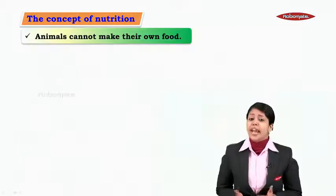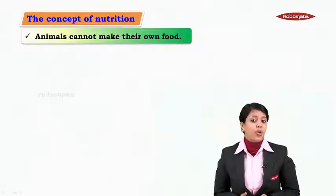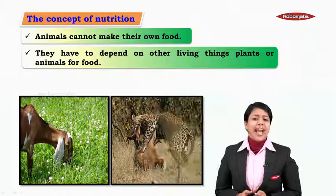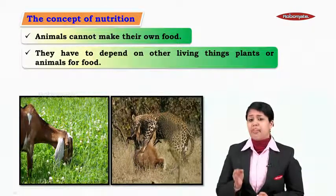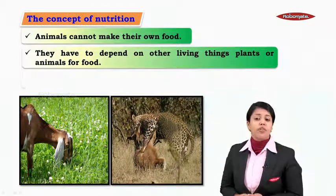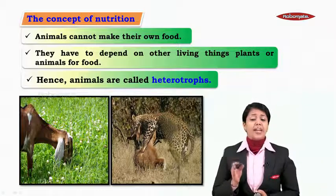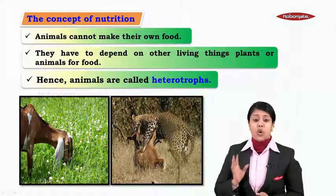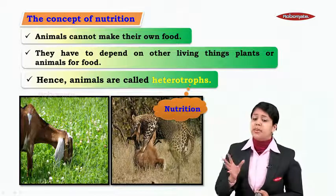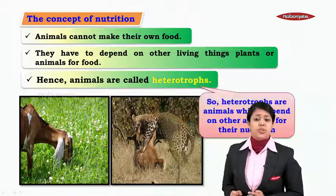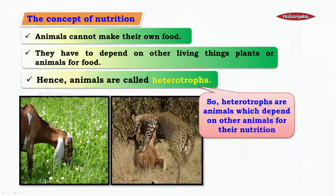Animals cannot make their own food because they lack chlorophyll. They have to depend upon other living things, such as plants or animals, for their food. Hence animals are called heterotrophs. 'Hetero' means other, 'troph' means nutrition. So heterotrophs are organisms which depend on other living things for their nutrition.